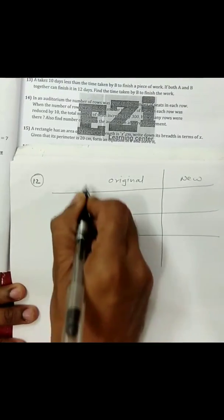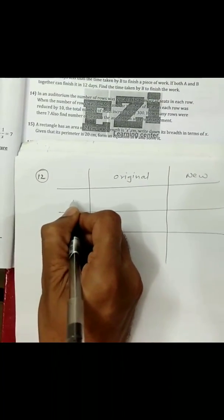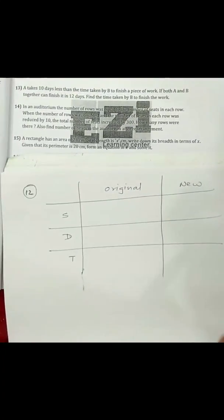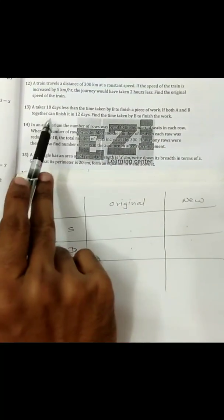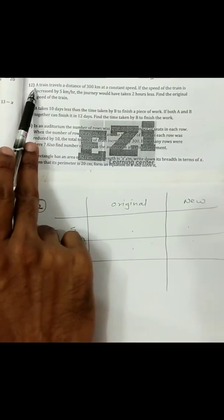Let's set up a simple table with columns for speed, distance, and time. Remember that in the quadratic equation, whenever we frame the table with two rows, you should use the data from the sum in the two rows, and the third data should be used while framing the equation. Most of you may not have understood — let me explain with this example.